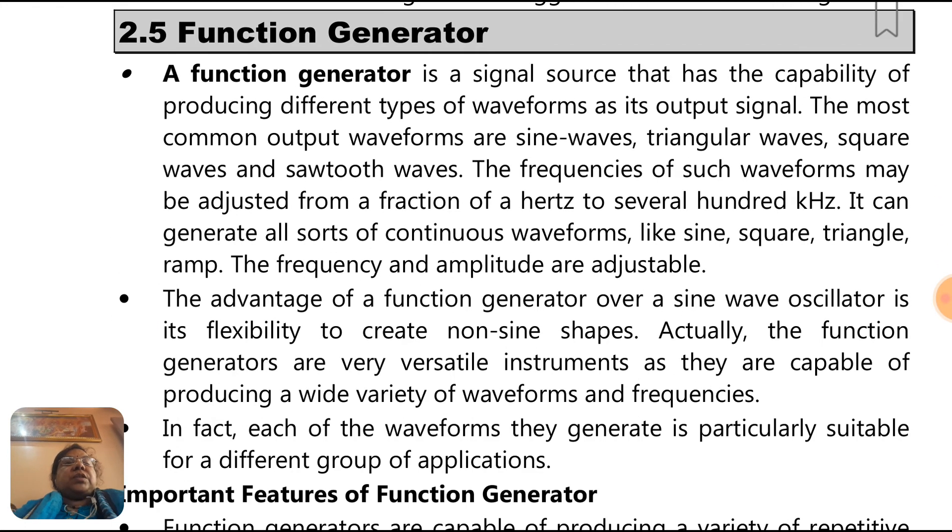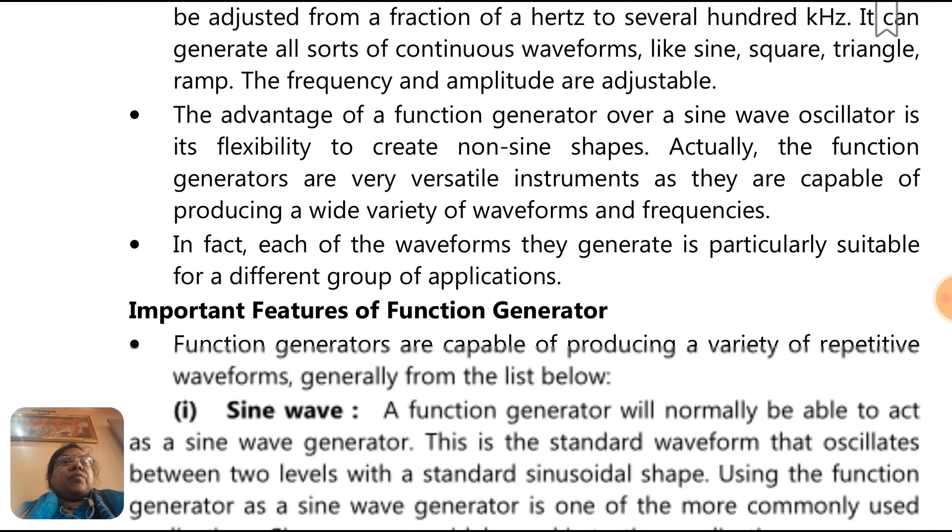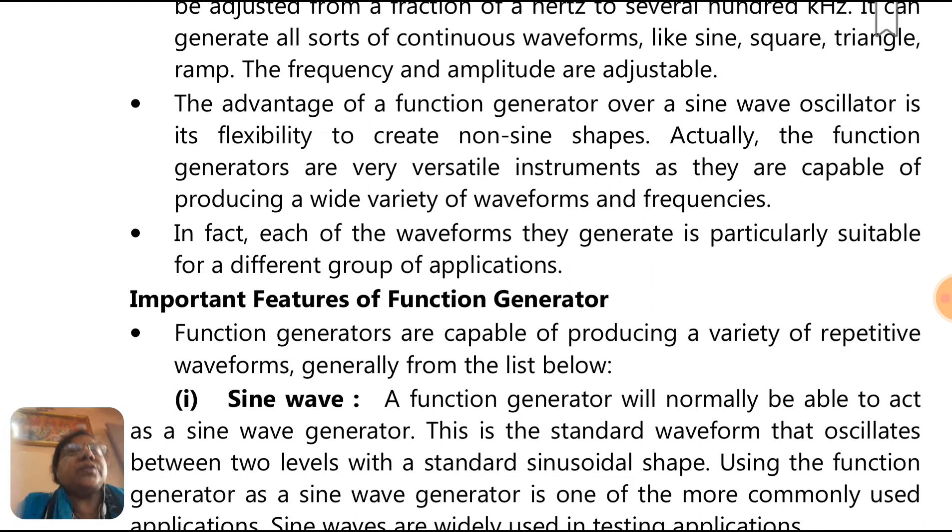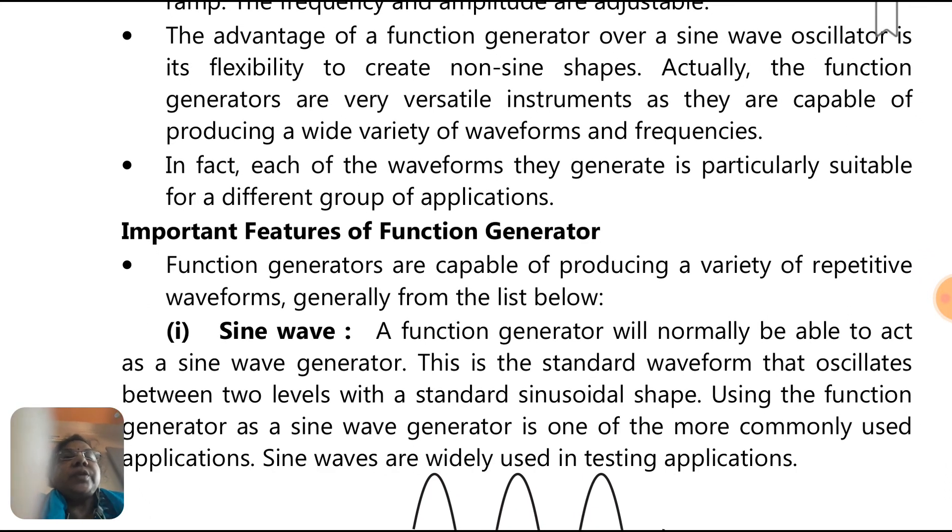Next application is the function generator. Function generator is a signal source that has the capability of producing different types of waveforms as its output signal. The most common output waveforms are sine waves, triangular waves, square waves, and sawtooth waves. The frequency of such waveforms may be adjusted from a fraction of a hertz to several hundred kilohertz. It can generate all sorts of continuous waveforms. The frequency and amplitude are adjustable. The advantage of a function generator over a sine wave oscillator is its flexibility to create non-sine shapes.